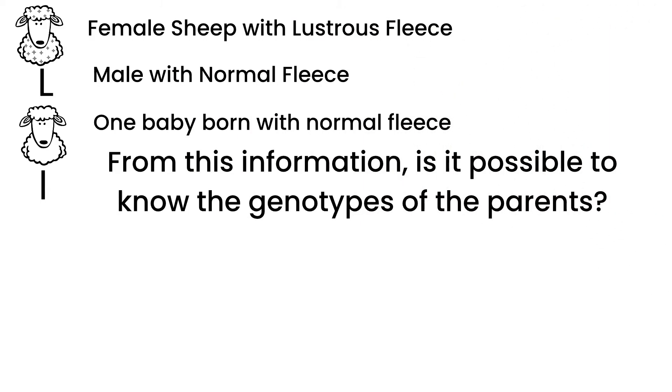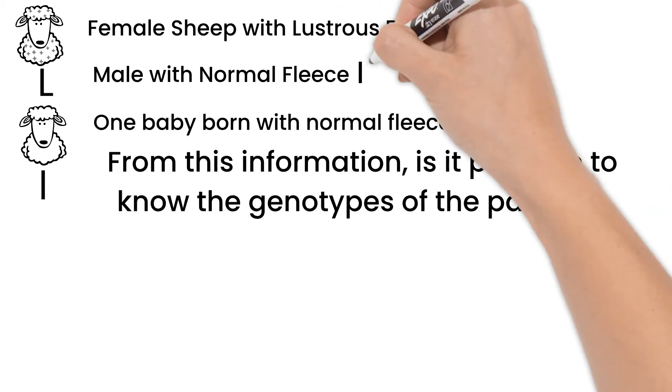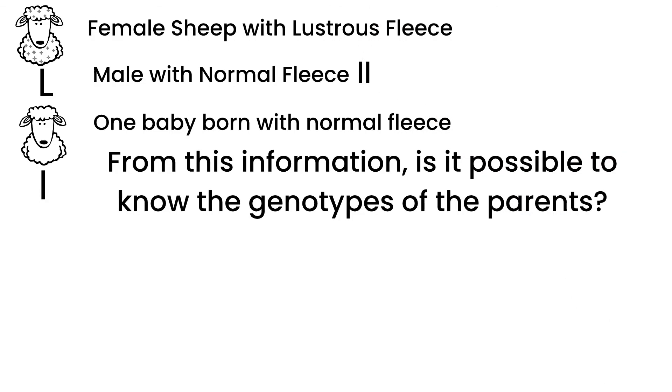Even before the baby, we know the male sheep is homozygous recessive, as he has normal fleece. But using what we know of their one baby, can we say what the female sheep's genotype is? Yes. Because the baby has normal fleece, it is homozygous recessive. It got one recessive allele from its dad, but it had to get the other one from its mom. Therefore, the female sheep is heterozygous.